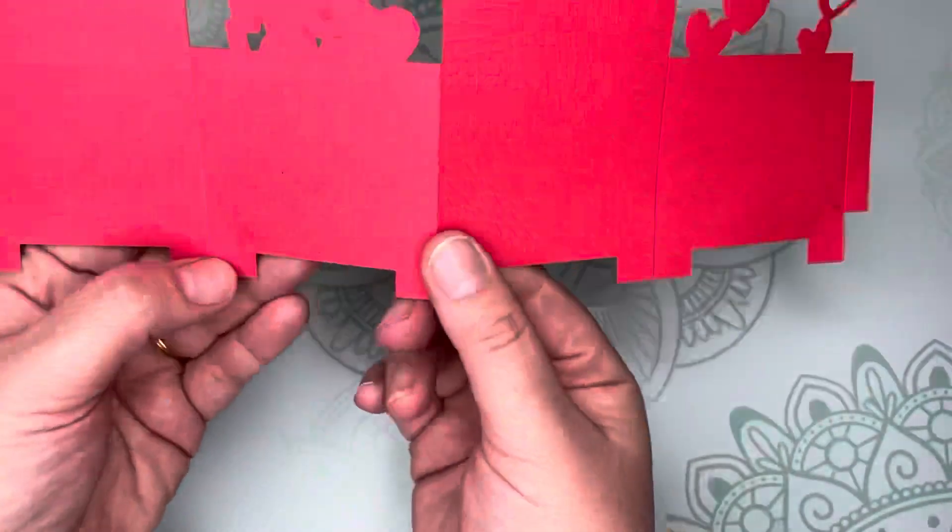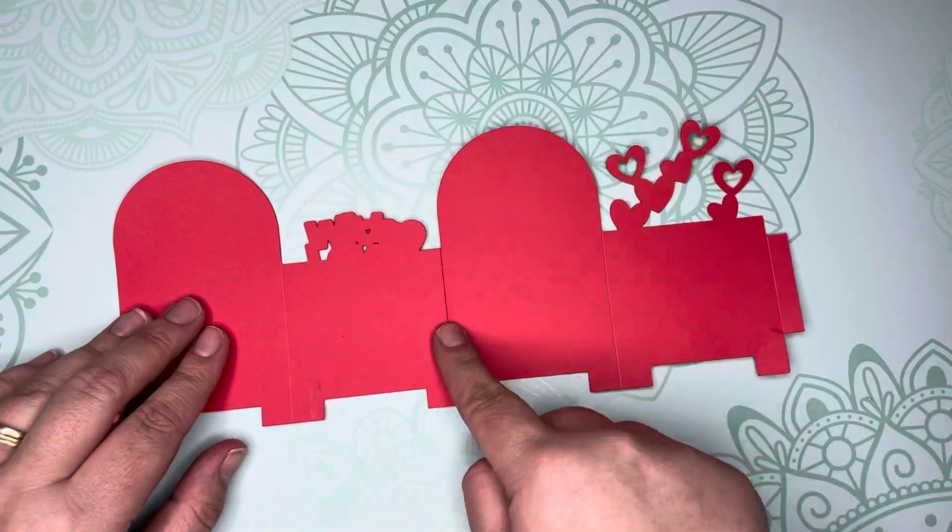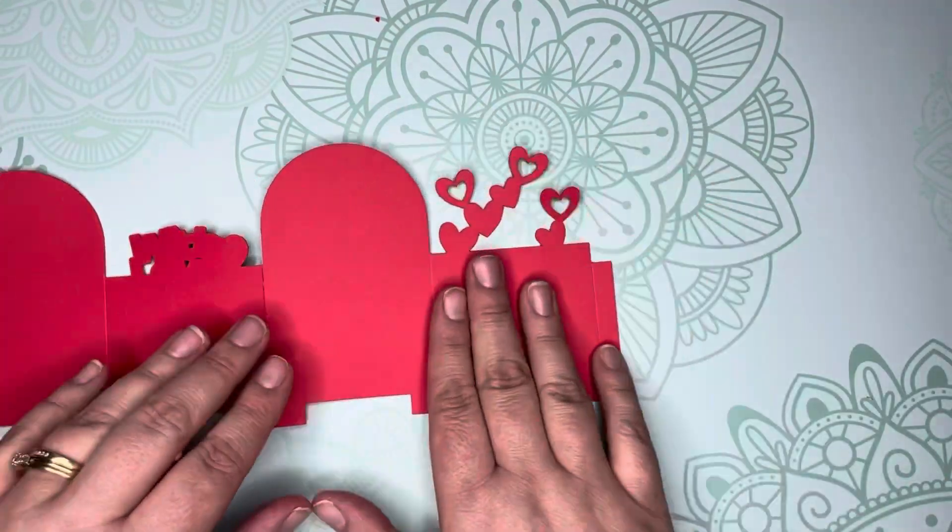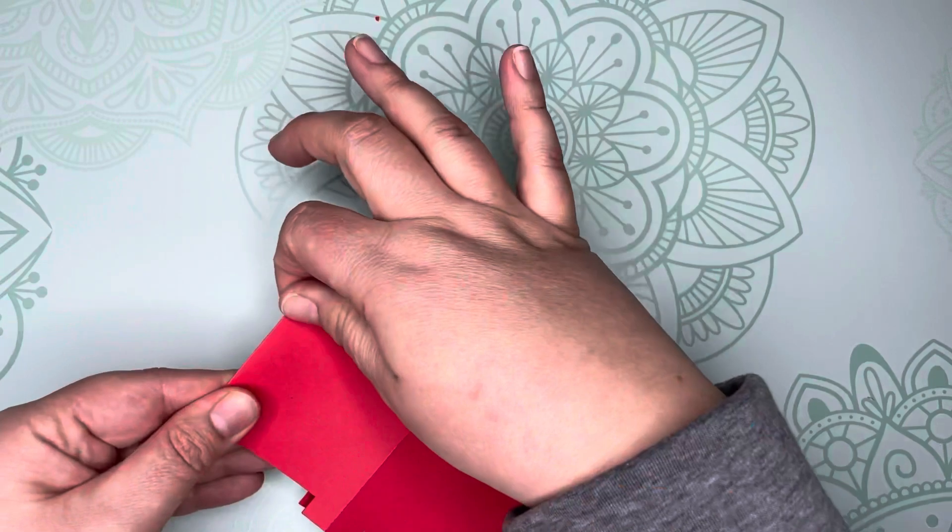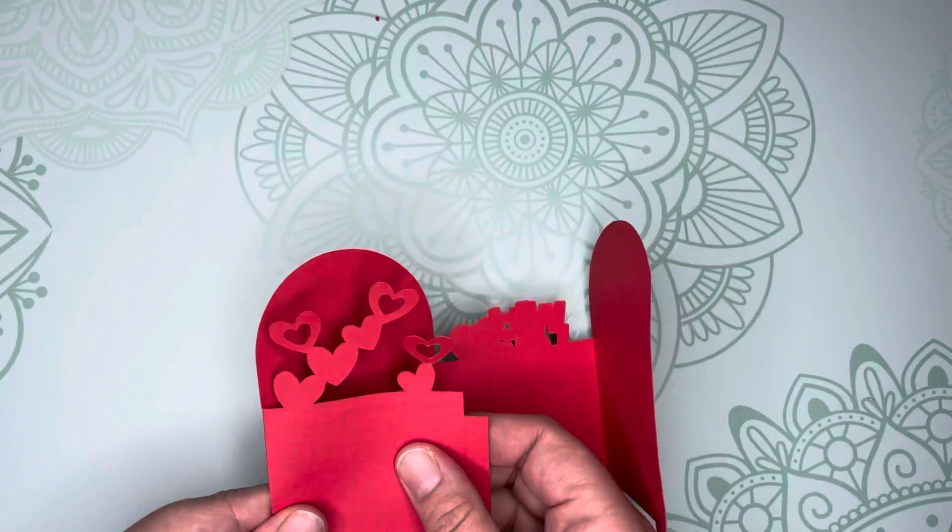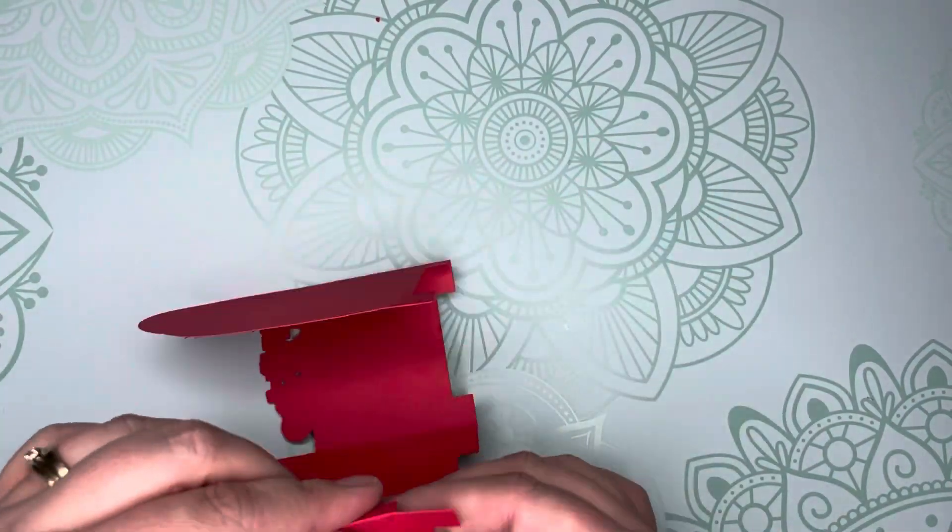To start, crease the score line of the red mailbox so you can start to fold the pop-up box into shape. The side with the hearts is going to be the back of the box. Glue the tab to the other side to form the box.